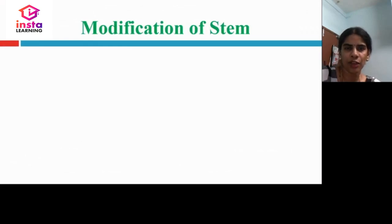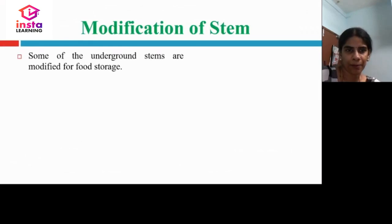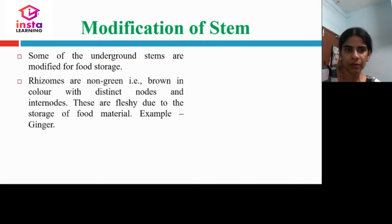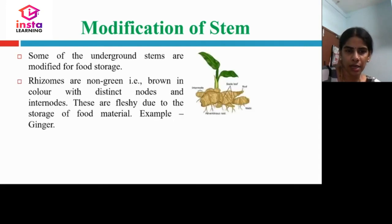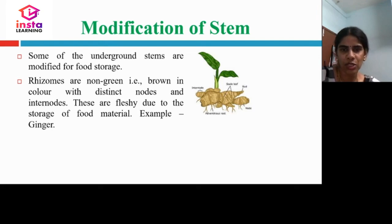Let us see the modification of stems. Some underground stems are modified for food storage. Rhizomes are non-green, brown in color, with distinct nodes and internodes, and are fleshy due to storage of food materials. For example, ginger — you can see it is non-green and brown in color, with many scale leaves which we peel during cooking.